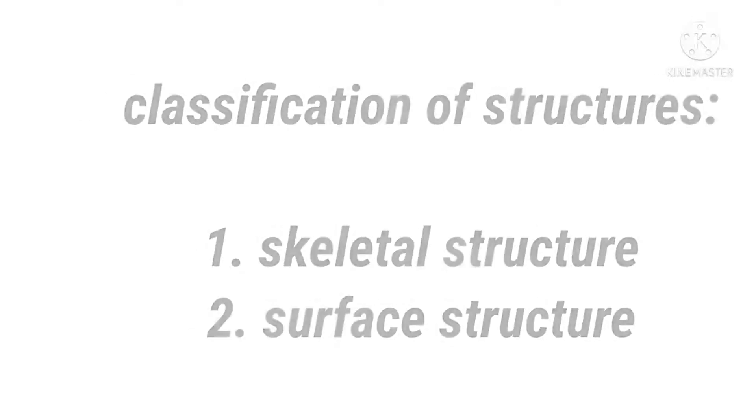First, we discuss skeletal structure. This type of structure looks like a skeleton. The members of a skeletal structure are connected to each other at points like joints or nodes. Depending upon the type of its joints, a skeletal structure may be classified into either pin-jointed structure, rigid-jointed structure, two-dimensional or plane structure, or three-dimensional or space structure.